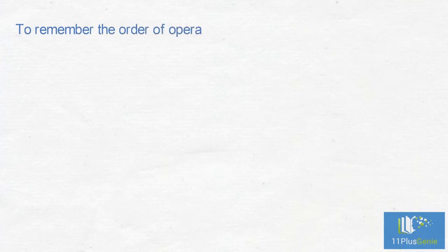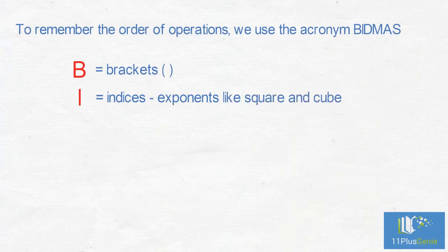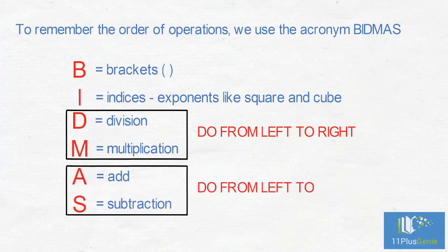To remember the order of operations we use the acronym BIDMAS. B is for brackets, I is for indices exponents like square and cube, D is for division, M is for multiplication do from left to right, A is for add, S is for subtraction do from left to right.